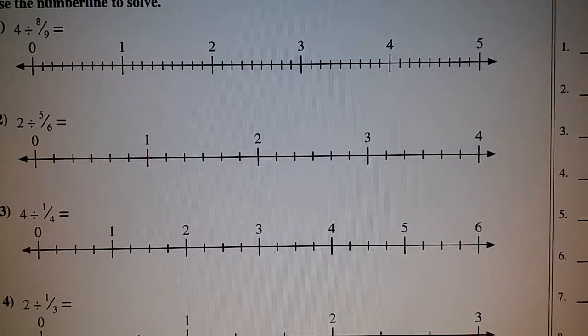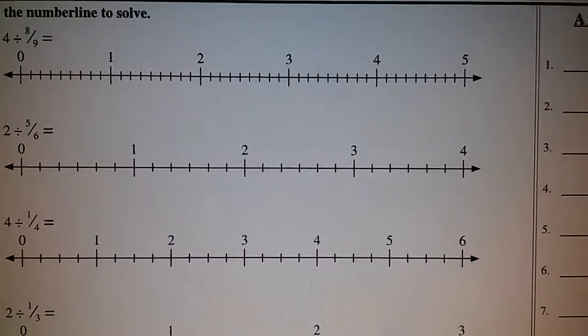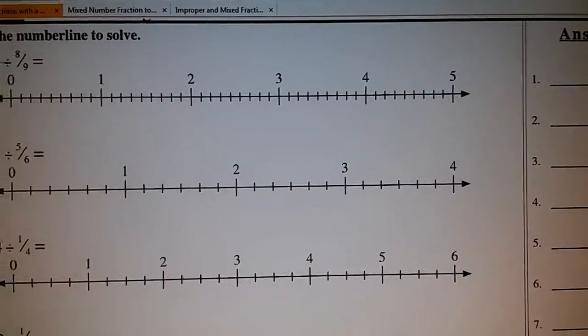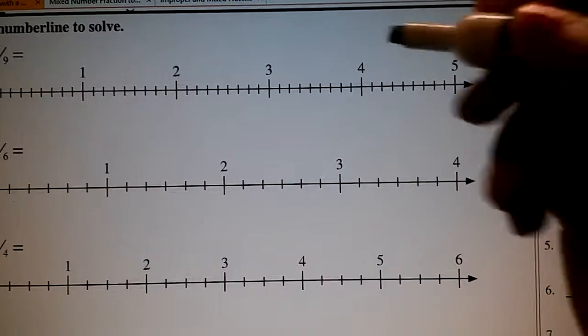Four is the dividend, so that tells us the number that's being divided. So on the number line, we want to put a dot on four.